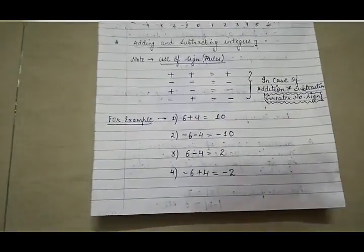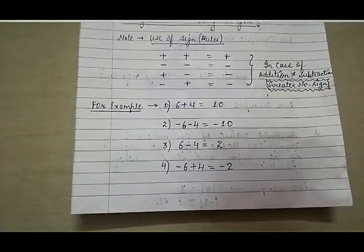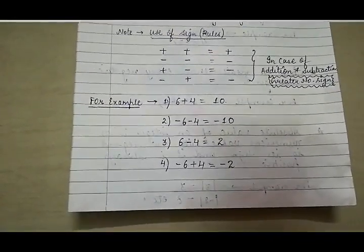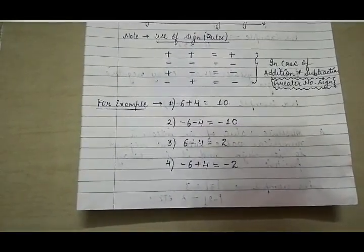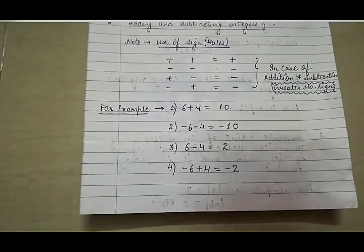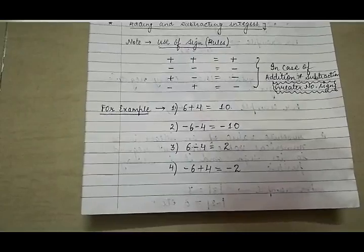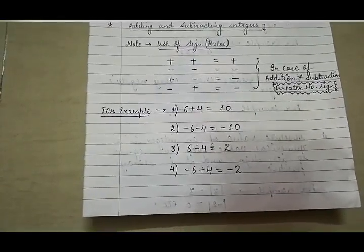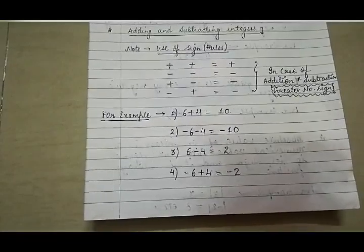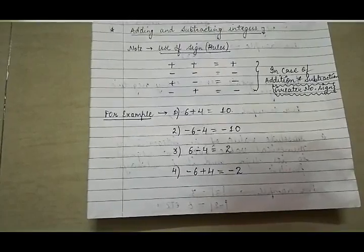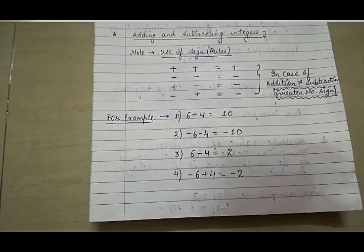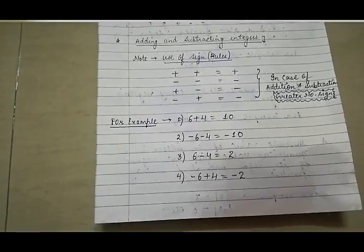Let's start with examples. 6 plus 4: both integers are positive, so the answer is 10. Next, minus 6 minus 4: minus minus becomes plus, so 6 plus 4 is 10. Now which sign comes in the answer? The greater number is 6, and before 6 we have a minus sign, so the answer is minus 10.